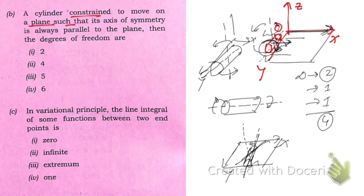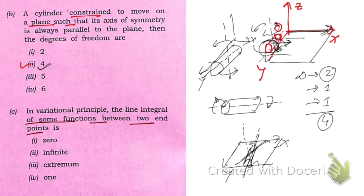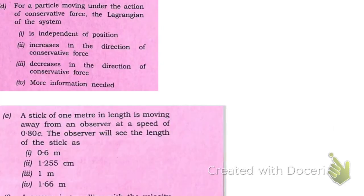So the total degrees of freedom are four. If you don't consider the revolution about the axis of symmetry, it would be three, but three is not among the options. So the correct option is four. In the variational principle, the line integral of some function between two end positions must be an extremum — that is option three, the correct answer.